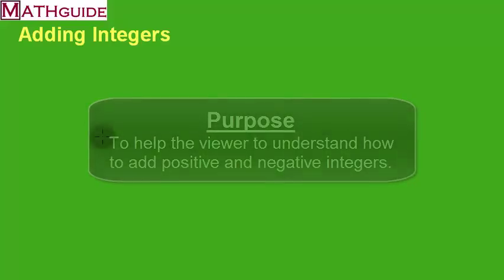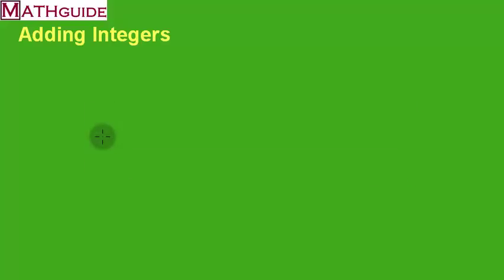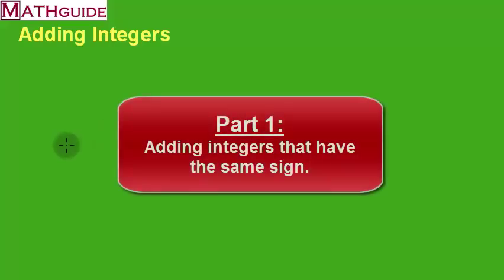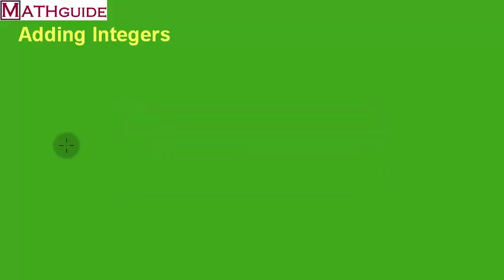I'm going to divide up this video into three sections. Let's talk about the first section. Let's talk about what happens when you add numbers that have the same sign. Within this section, let's talk about when you add positive numbers.